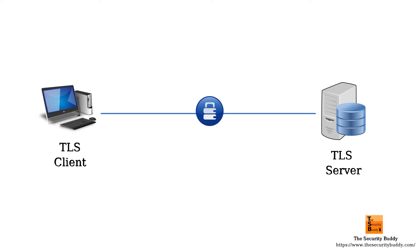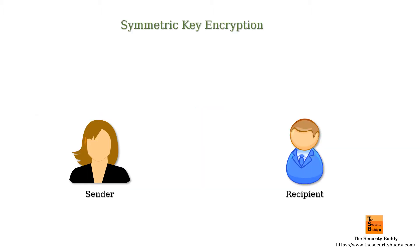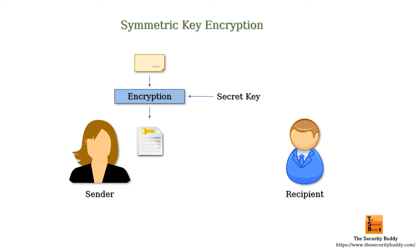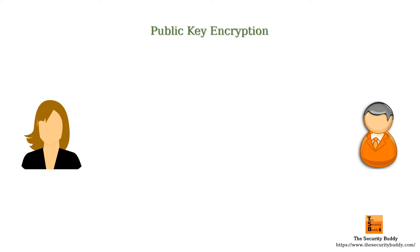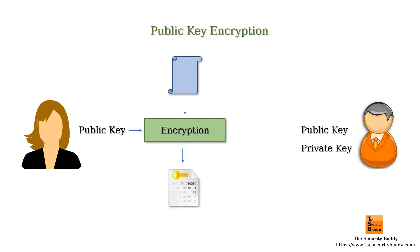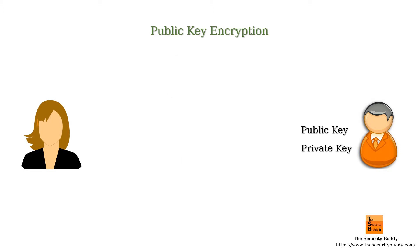Let's say Alice wants to send an encrypted message to Bob. Alice can use symmetric key encryption, but in that case Alice would need to pre-share the secret symmetric key with Bob, and that can be inconvenient at times. So Alice can use public key encryption instead. Alice can encrypt the message using the public key of Bob and send it across. Bob can decrypt the encrypted message using his private key.